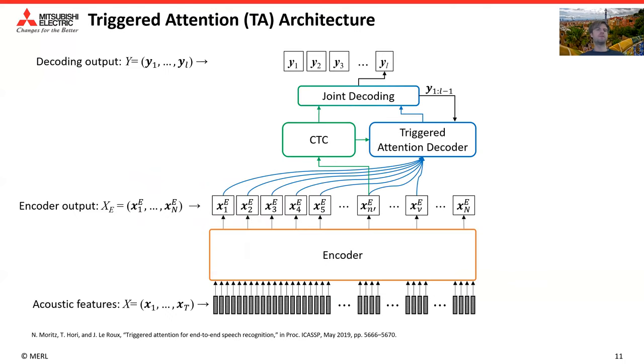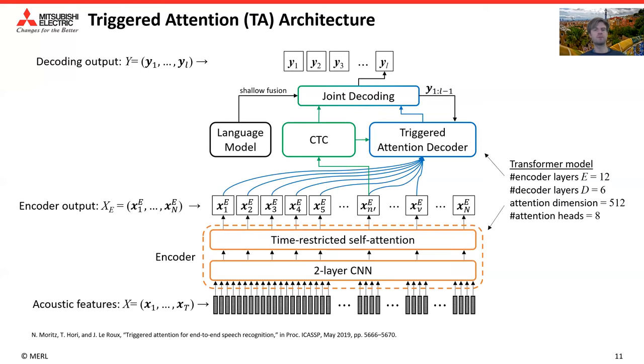This is why we came up with a different solution, which we call triggered attention. For triggered attention, we train an encoder-decoder neural network jointly with CTC. The CTC output we are using to derive an alignment. For training, we use CTC output to compute forced alignment. This information is then used to truncate the encoder state sequence for the attention decoder accordingly. As I said before, in this work we are using a transformer architecture. The encoder has now two modules. The first module is a two-layer CNN, and the second module is a time-restricted self-attention neural network transformer. The decoder is now also a transformer architecture.